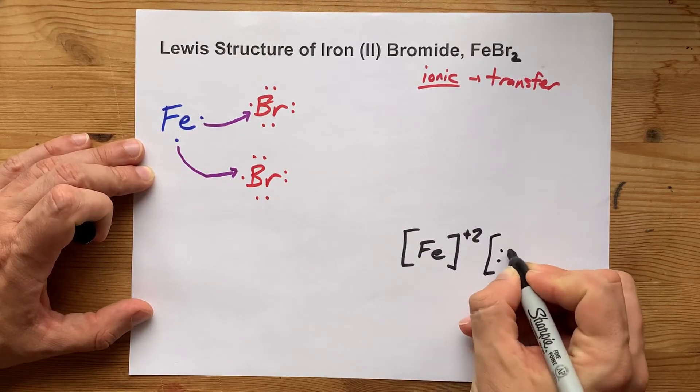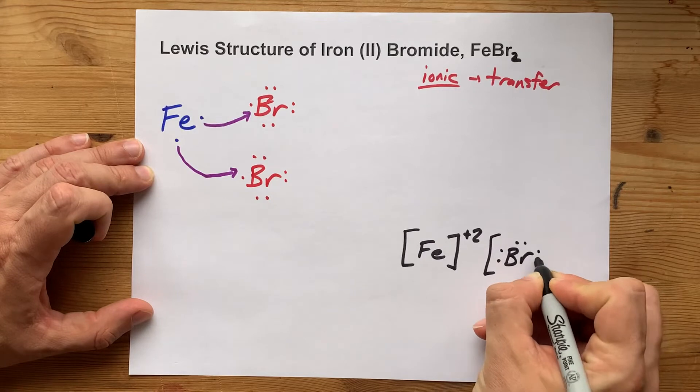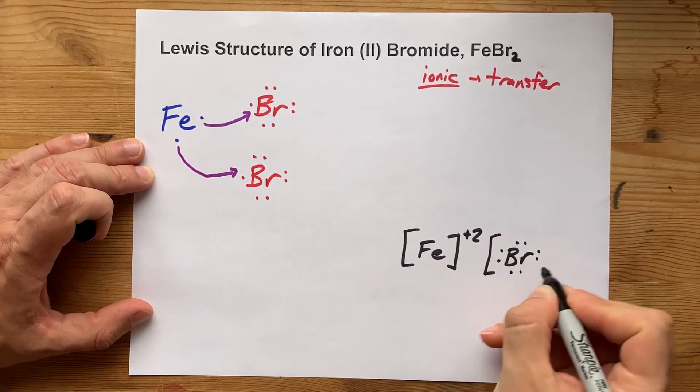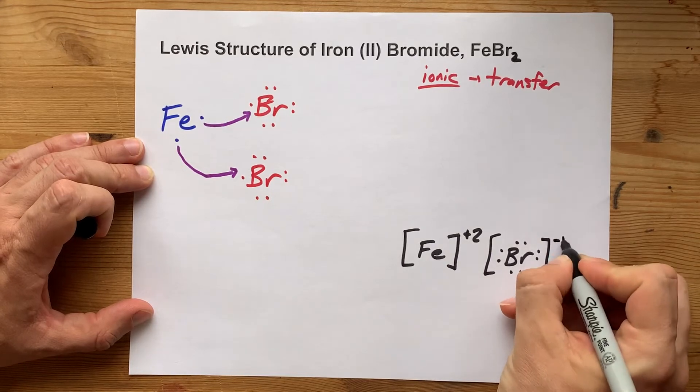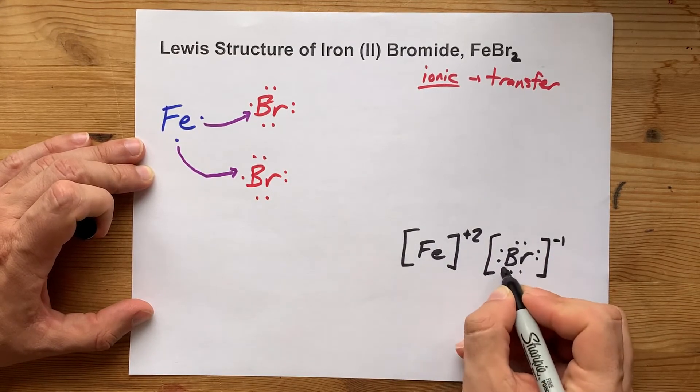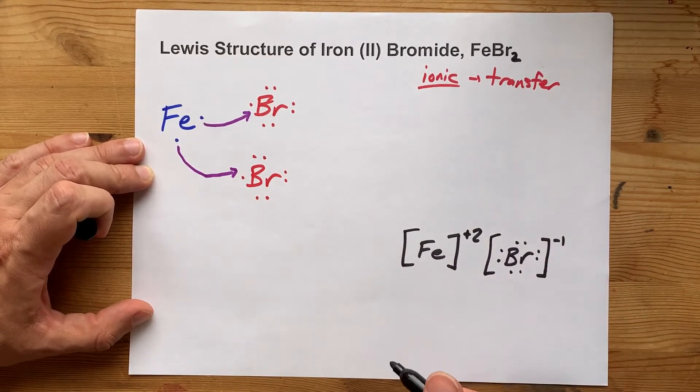Now we also have bromines, but the bromines, which brought seven electrons each, now have eight. So make sure you draw those four pairs of electrons, minus one charge, because it has one extra negatively charged electron.